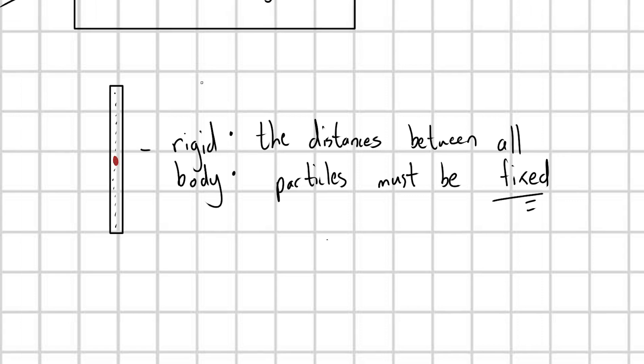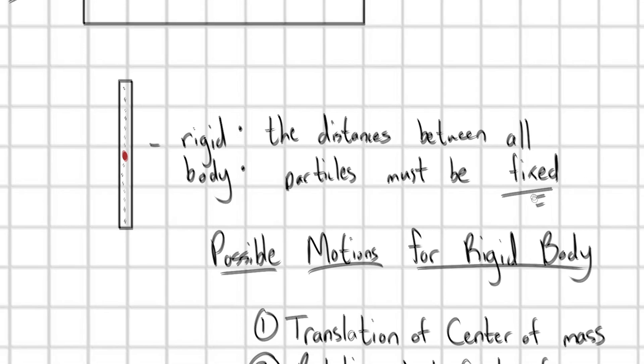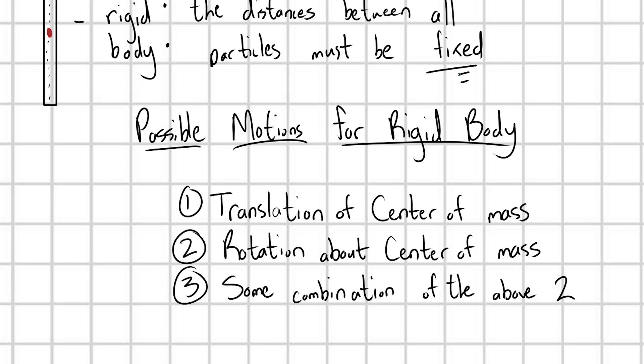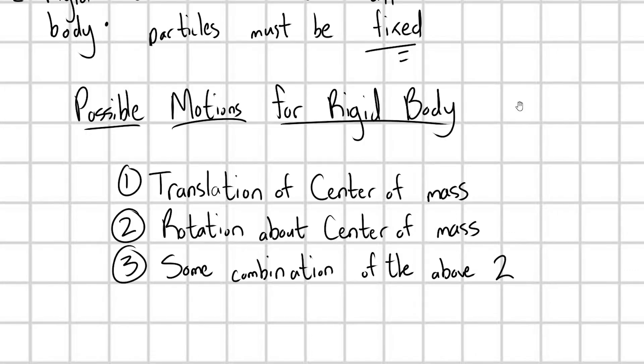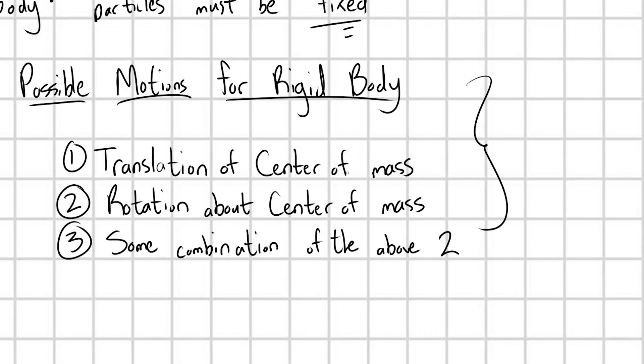If this stick has some center of mass here in red, this notion of rigidity constrains the motion of our system of particles. We can always break down the motions into either A: translating the center of mass of our rigid body, and B: rotating our object about that center of mass. We can combine those two motions to build up any type of motion you can possibly imagine. This notion of decomposing a rigid body's motion into translation and rotation follows Schultz's theorem.